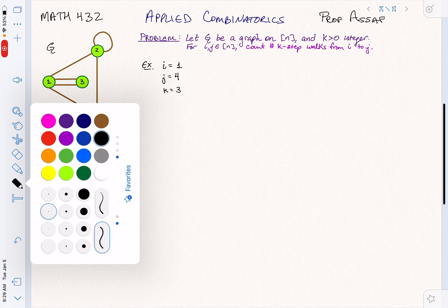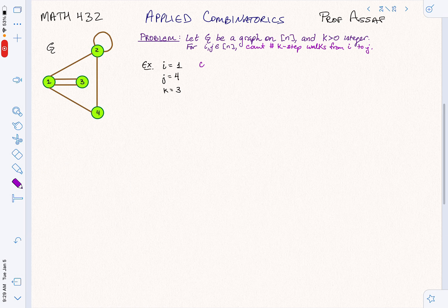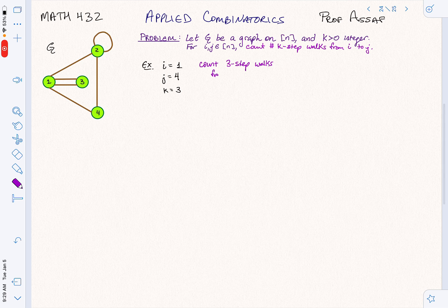So we want to count three step walks from 1 to 4. How many are there, and how can we count them in an efficient way?